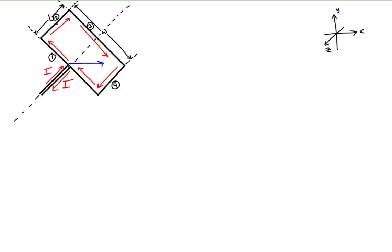Let's put this loop in a uniform magnetic field that is parallel to the positive X-axis. This magnetic field will exert a magnetic force on each of the line segments according to the formula found previously: the magnetic force on a current-carrying wire equals the product of the current, the magnetic field, the length of the wire, and the sine of the angle between the current direction and the magnetic field. We'll model the location of the magnetic force on each segment as being at the center of that segment.